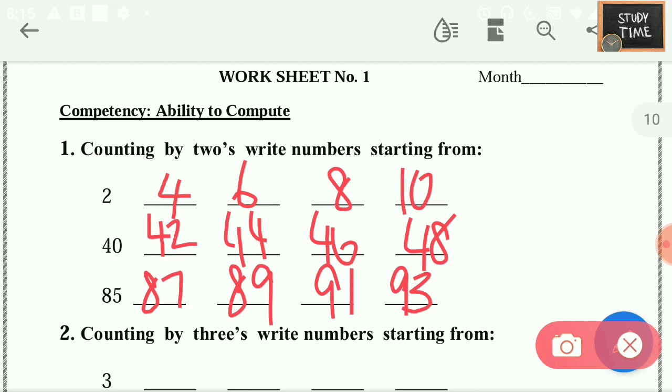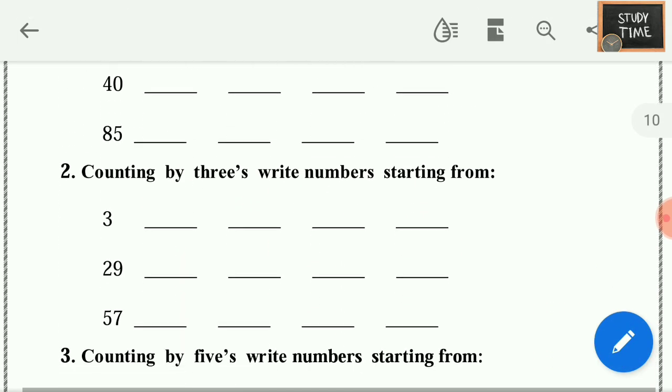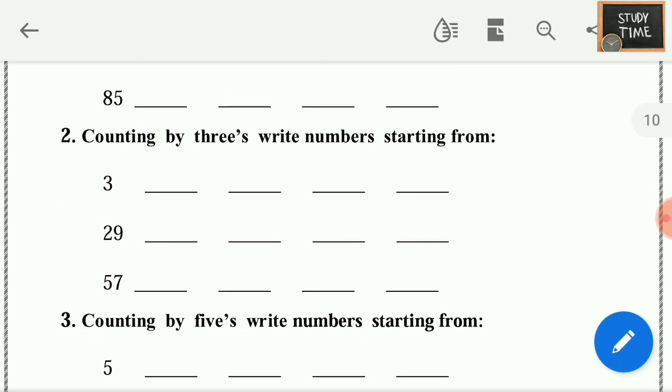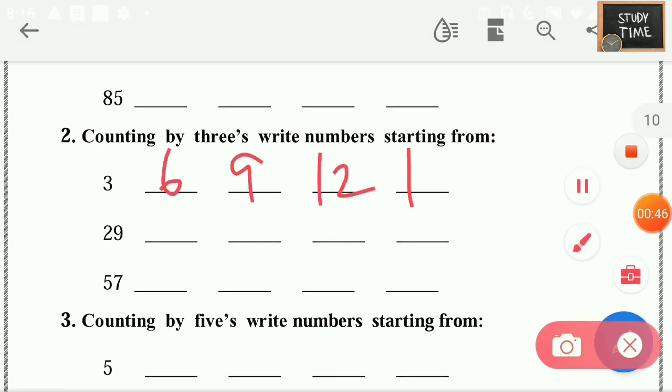Next, counting by 3's, write numbers starting from 3: 3, 6, 9, 12, 15 you have to write. For 29 you have to write 32, 35, 38, 41. You have to write like this. Next, for 57: 60, 63 you have to write.